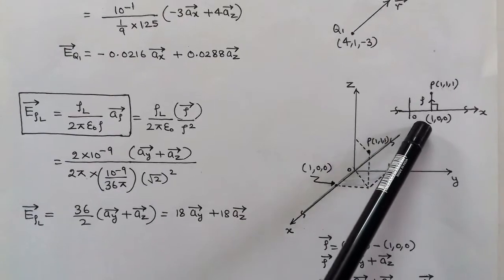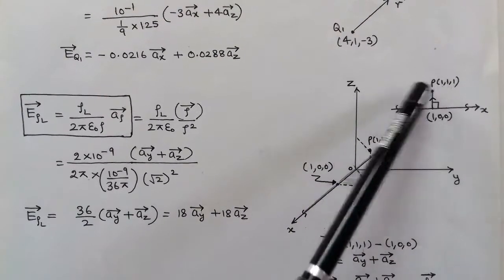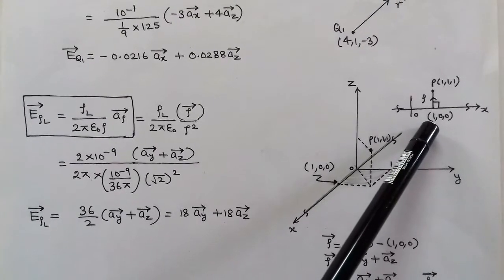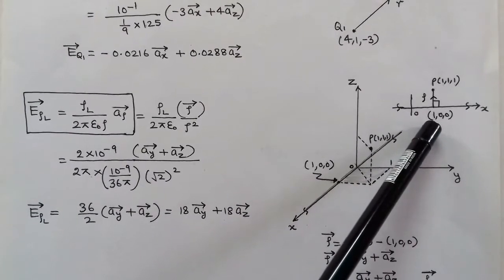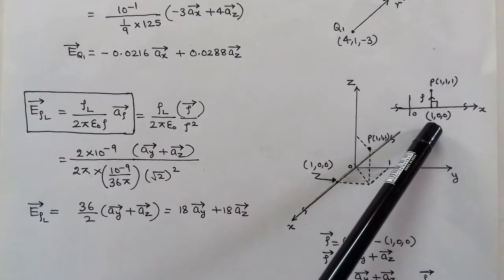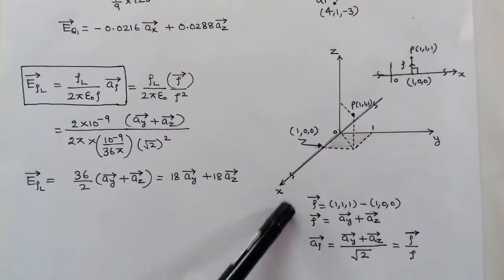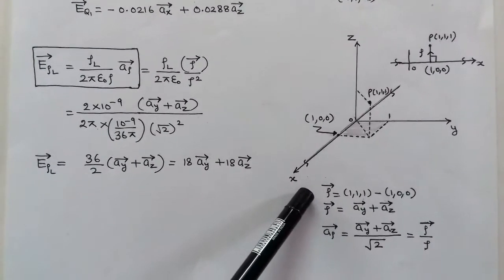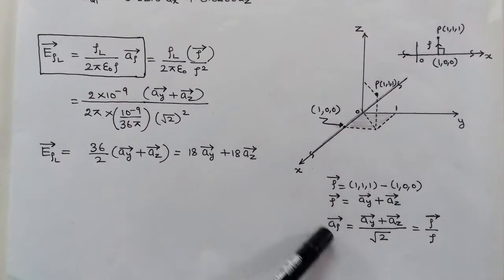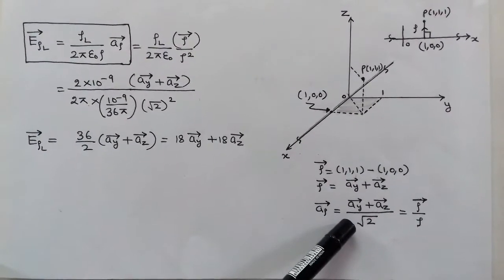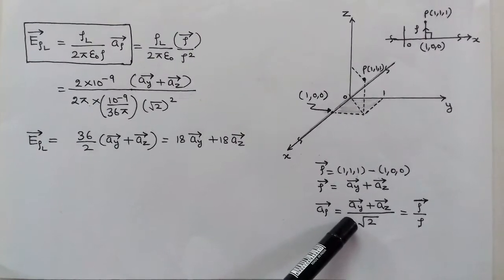Here ρ is the perpendicular distance from point P to the x-axis. We draw a perpendicular from point P (1,1,1) to the x-axis, landing at point (1, 0, 0). So the ρ vector is (1,1,1) minus (1,0,0), which gives ŷ + ẑ, and the unit vector ρ̂ equals (ŷ + ẑ) / √2.